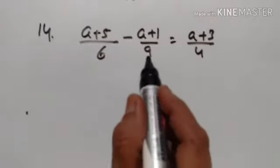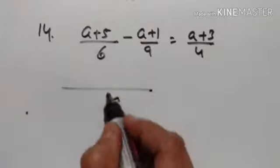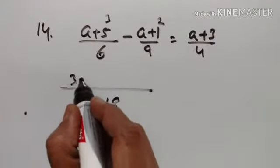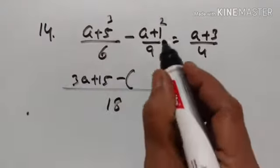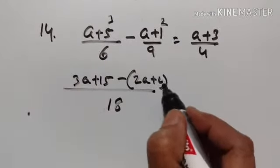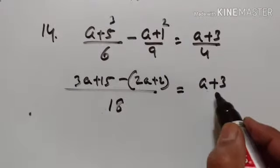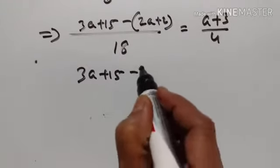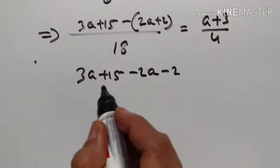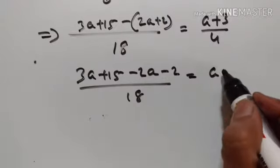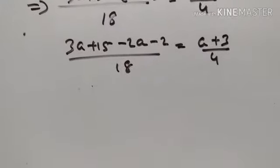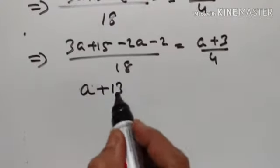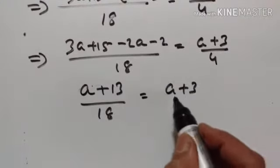14th problem. The LCM of 6 and 9 is equal to 18. 6 threes are 18, 9 twos are 18. So 3 into a plus 5 equals 3a plus 15, minus 2 into a plus 1 equals 2a plus 2, all over 18, is equal to a plus 3 upon 4. Simplifying: 3a plus 15 minus 2a minus 2 upon 18, giving a plus 13 upon 18 is equal to a plus 3 upon 4.